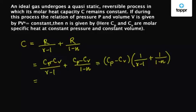Now we take Cv out, then we get Cv into Cp upon Cv minus 1 into 1 upon gamma minus 1 plus 1 upon 1 minus n.